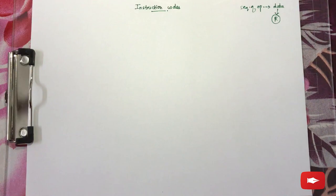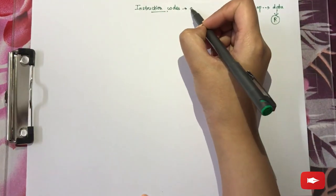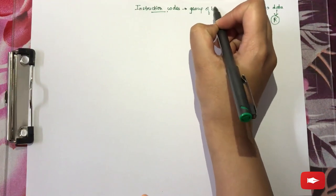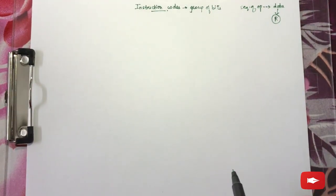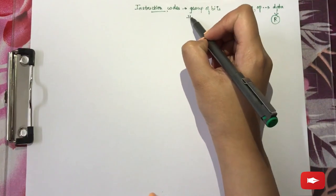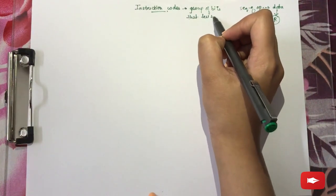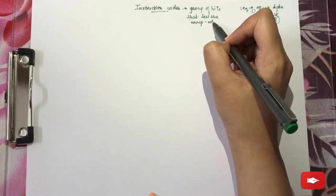Now we come to the fact of what are instruction codes. Instruction codes are basically the group of bits that tell the computer to perform specific operations — the group of bits that tell the computer what to do.